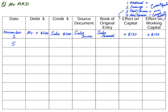On 5th November: bought goods on credit from Mr. Y. 'Bought' means purchases. Purchases are always debited because stock — an asset — increases. We never use stock/goods/inventory account; we always use sales or purchases. Mr. Y is a supplier, which is a liability; whenever a liability increases it is credited. The source document is a purchase invoice.